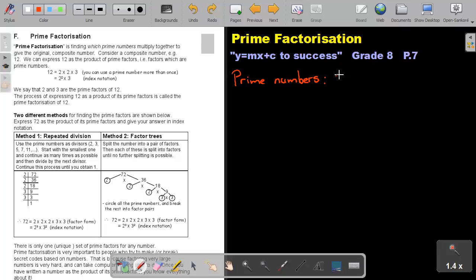Let's start with the first prime number. That will be 2, followed by 3, then 5, then 7, not 9, then 11, and so you can go on. Now, if I ask you to write 72 as the product of its prime factors, then I will start with the first prime number. Start with the smallest one and continue as many times as possible. So start with 2.